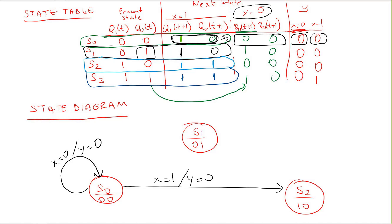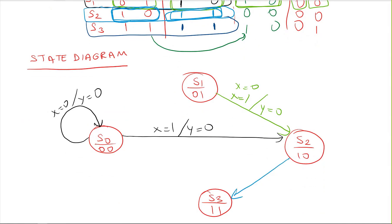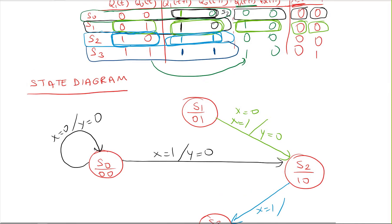From s1, whether the input is 0 or 1, the next state is s2 with output y=0 in both cases, so we draw one arrow from s1 to s2 labeled x=0 or x=1, y=0. From s2, if the input is 1, we go to s3 with output y=0.